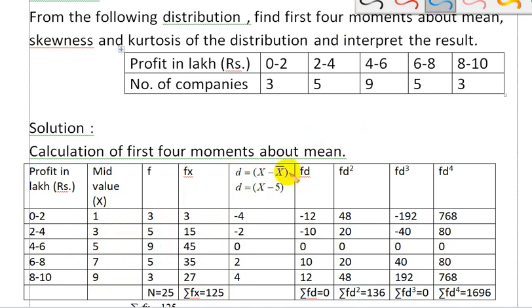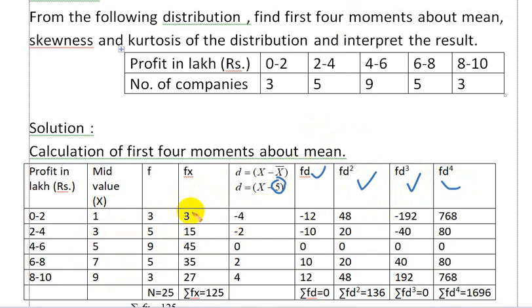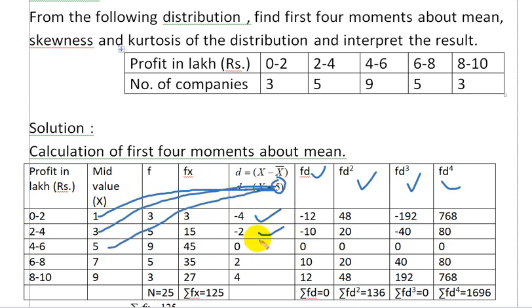Now d is defined as x minus x̄, where x̄ equals 5. We set up columns: fd, fd squared, fd cubed, fd to the power 4. For x = 1: d = 1 - 5 = -4. For x = 3: d = 3 - 5 = -2. For x = 5: d = 5 - 5 = 0. For x = 7: d = 7 - 5 = 2. For x = 9: d = 9 - 5 = 4.